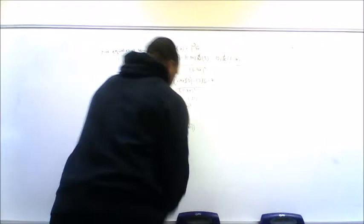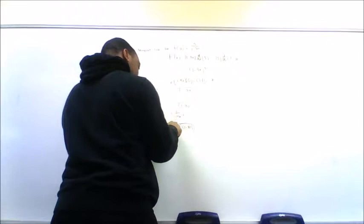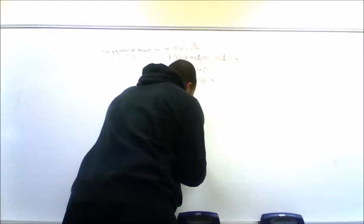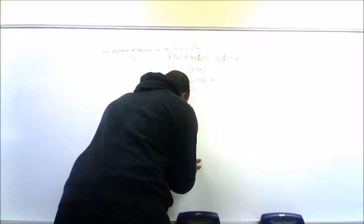Simplify: that's 21 over 1 minus 7 times 1, that's 1 minus 7, which is negative 6. Same thing again, negative 6. So my final answer is 21 over 36, and that is my slope.